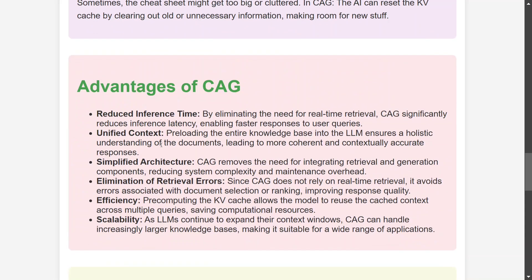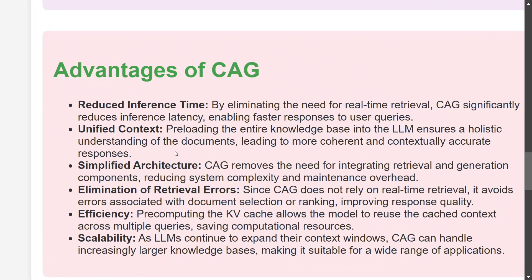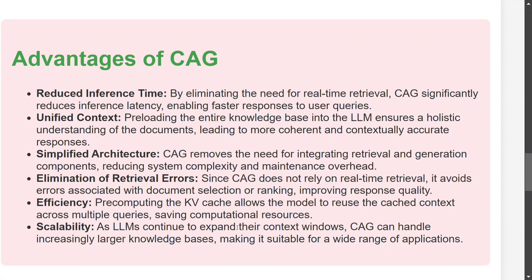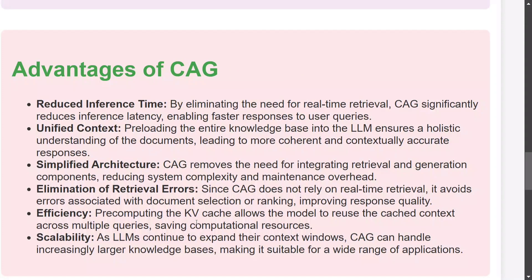There are many advantages to CAG. First, reduced inference time — since we are not calculating key and value in real time, it saves a lot of time. Second, unified context — by preloading the entire knowledge base, the LLM has a holistic understanding of the document, unlike RAG where only relevant elements from the vector database are passed. Third, simplified architecture — it removes the need to integrate vector databases. Fourth, elimination of retrieval errors, as mentioned in the paper itself, since there is no real-time retrieval. You can also fine-tune your KV cache, making it more efficient and scalable.